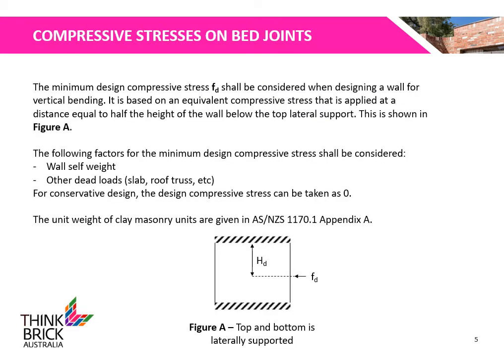The minimum design compressive stress, FD, shall be considered when designing a wall for vertical bending. It is based on an equivalent compressive stress that is applied at a distance equal to half the height of the wall below the top lateral support, as shown in Figure A. Factors such as the wall's self-weight and other dead loads such as slabs or roof trusses shall be considered when determining the minimum design compressive stress.